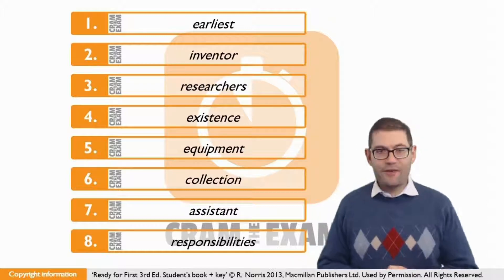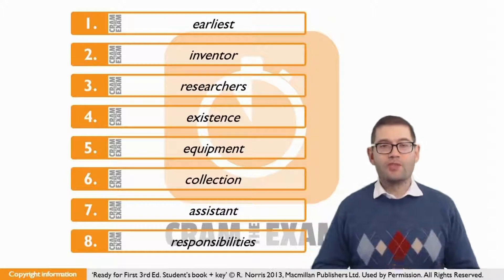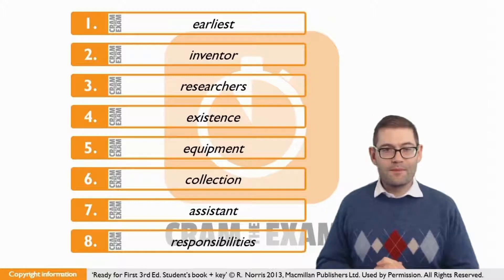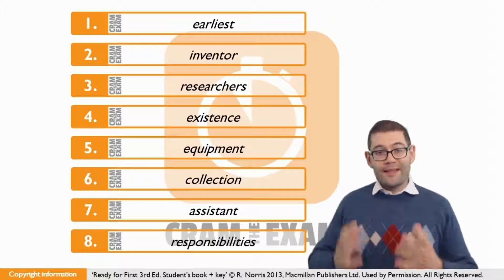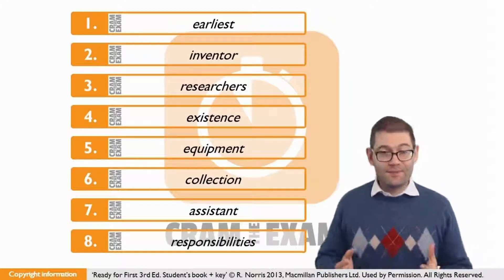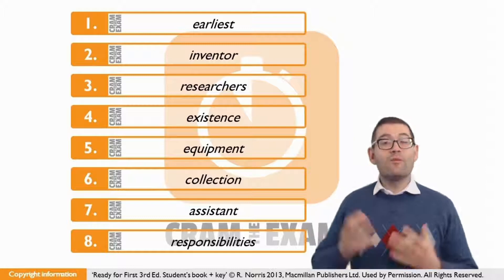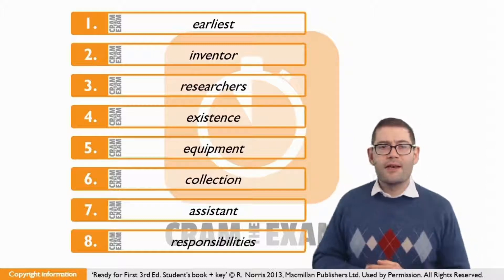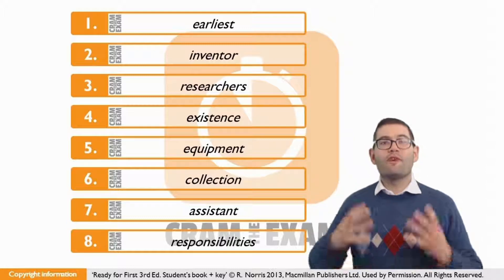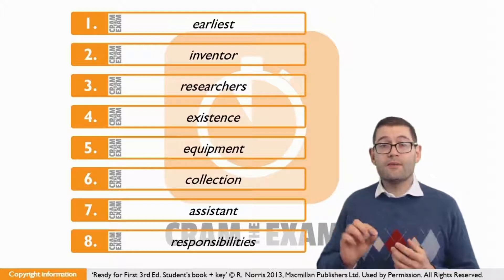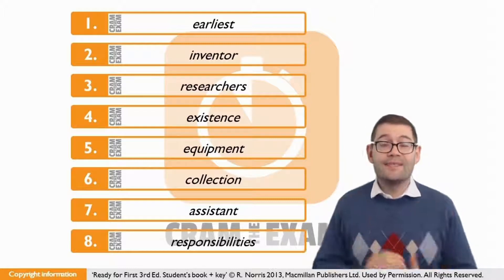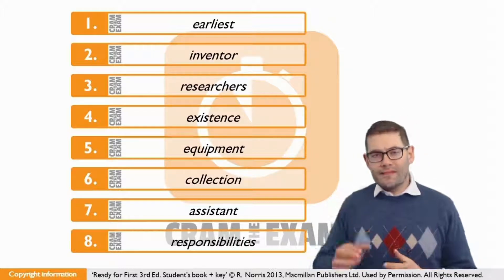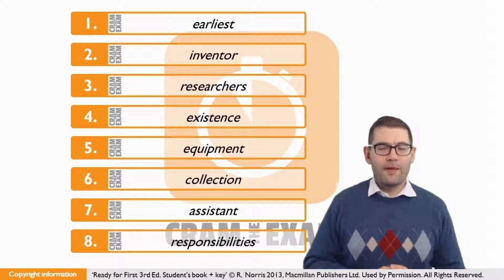For question number four, we really need to put on our vocabulary hats to finish the expression 'to come into' plus something. The context tells us that the internet hasn't been invented and won't be invented for another two decades, so we're waiting for it to come into — the answer is 'existence.'